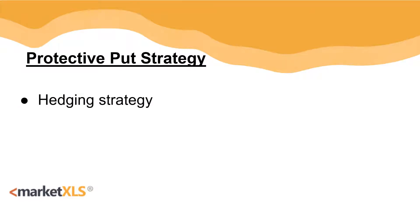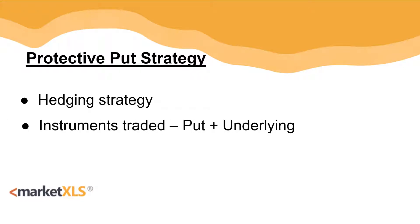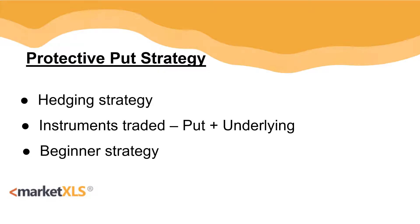Hedging strategies are some of the simplest option strategies that a trader can implement. A hedge involves exposure to an underlying stock and then taking an option position to hedge the risk of the downside. If the investor has made profits from his position on an underlying stock and now wants to protect those profits from a changing trend, then he can implement a protective call or a protective put strategy based on the position he has for the underlying.